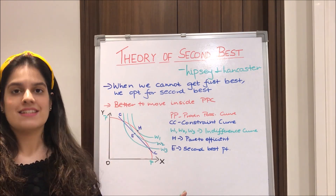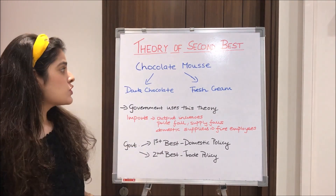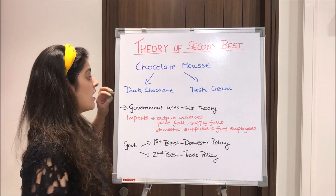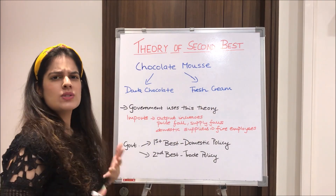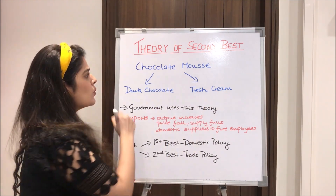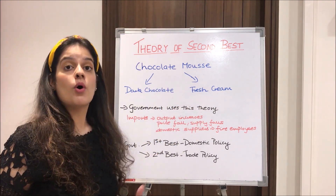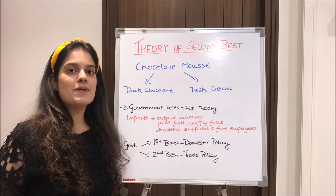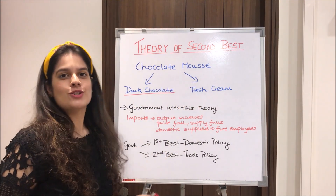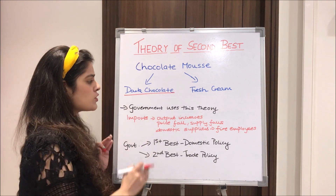I'll explain the theory of second best with an example. Suppose I need to make chocolate mousse, and the two ingredients required are dark chocolate and fresh cream. Due to some scarcity in the market, fresh cream is not available. Do I make chocolate mousse with just dark chocolate — where maybe the mousse isn't liked or I suffer a loss? The second best option is to use the dark chocolate and make a product that doesn't require fresh cream, like chocolate pudding or chocolate cookies. That is the second best option.